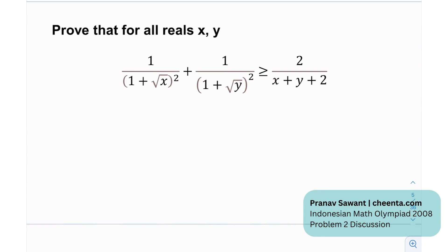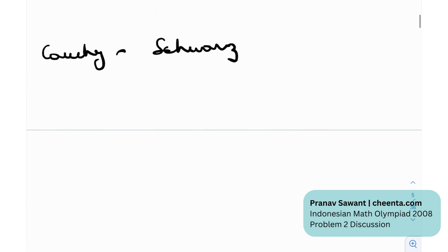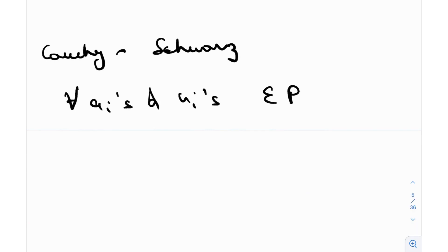We want to prove that for all reals x and y, a given inequality holds. Before we jump onto this problem, let me introduce you to the Cauchy-Schwarz inequality. So for all a_i's and b_i's that are reals, the following inequality is satisfied.